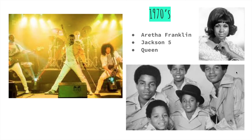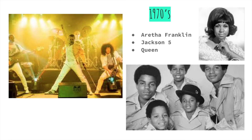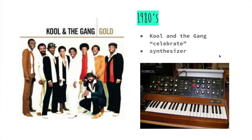Moving up to the 70s, we had some famous singers like Aretha Franklin — she was a gospel singer with an amazing voice. And we had a little group pop up called the Jackson Five — you might recognize one little boy in particular, and we'll talk about him more in a few slides. And there was a rock band called Queen, famous for singing We Will Rock You, We Are the Champions, and Bohemian Rhapsody — an amazing rock group.